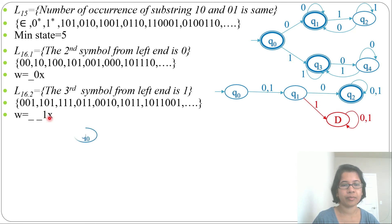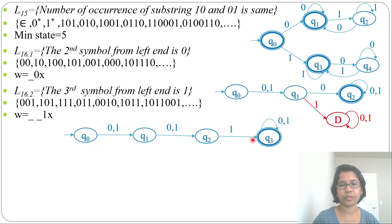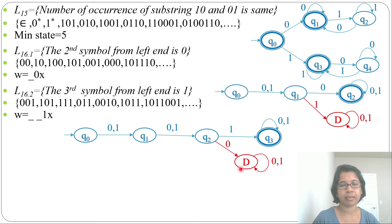From Q0 by 0 or 1, it goes to Q1 — this is the first symbol. From Q1 by 0 or 1, it goes to Q2 — this is the second symbol. From Q2 by 1, it goes to Q3 — this is the third symbol, and it is 1. At Q3 there is a self-loop on 0 and 1, accepting anything after. To complete the DFA, from Q2 by 0 it goes to a dead state, and the dead state has a self-loop on 0 and 1.